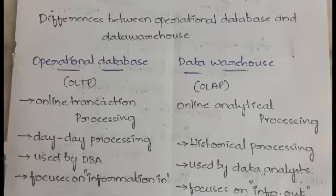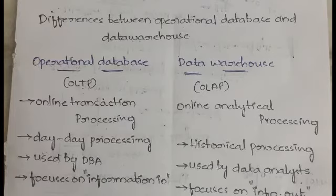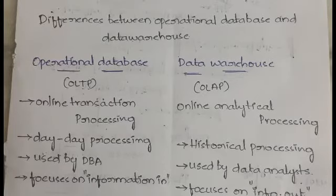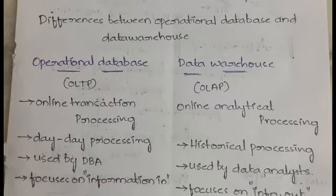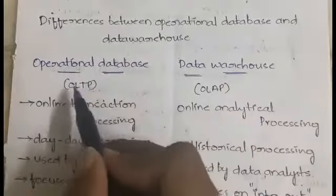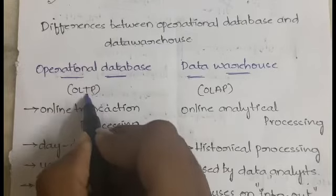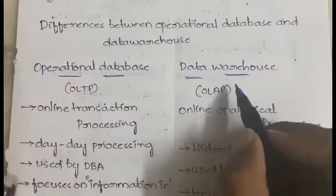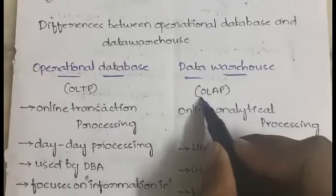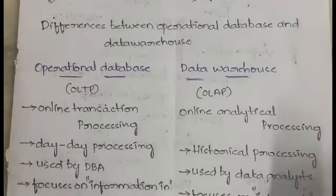Hello everyone, welcome back to my YouTube channel Trouble Free. In today's video I am going to explain the differences between operational database and data warehouse in the subject of data warehouse and data mining. This is the second video related to this subject. We can also say the differences between OLTP and OLAP. Operational database is also called OLTP — online transaction processing — and data warehouse is also called OLAP — online analytical processing.